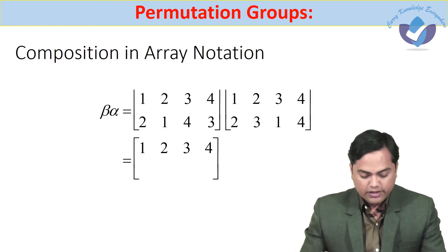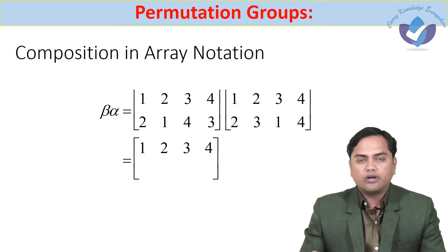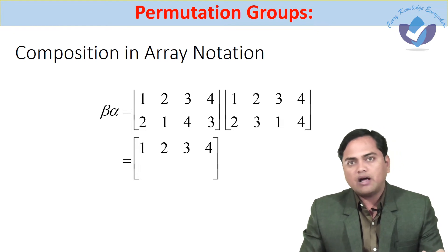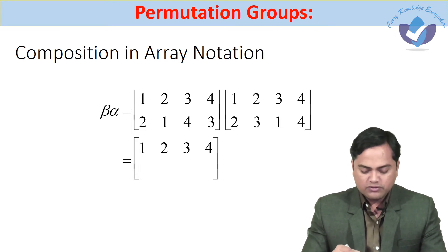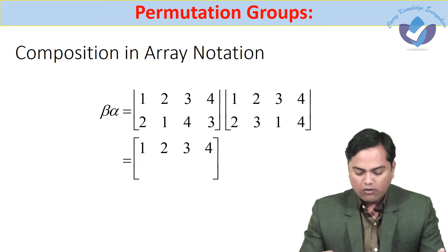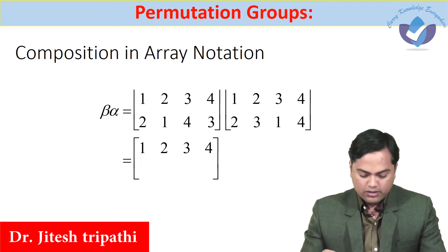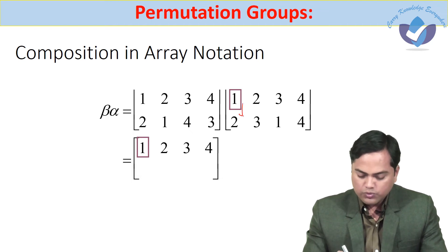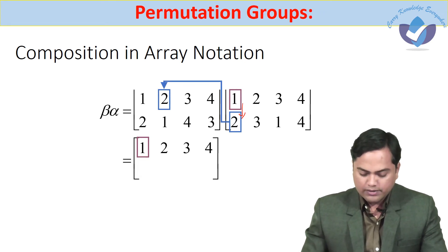Composition in array notation: we want to find out beta alpha. Beta alpha is, first of all we write beta [1 2 3 4; 2 1 4 3] and alpha. Beta of alpha would be: we write 1, 2, 3, and 4. Then 1 goes to 2, 1 goes to 2, and this 2 goes to 1.